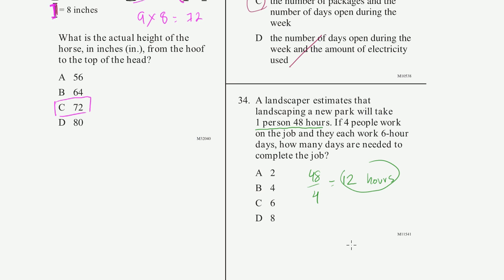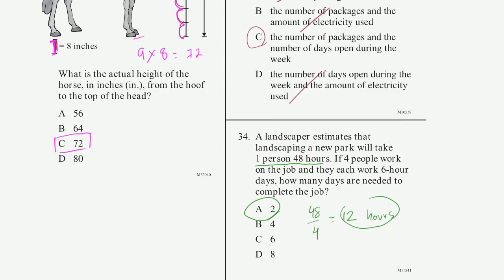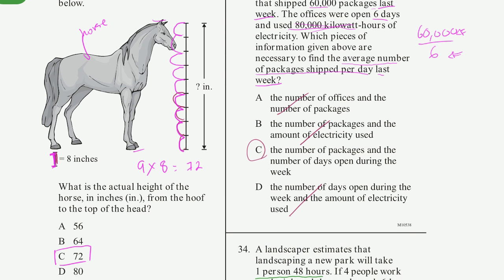all working simultaneously, and they each work 6 hour days. So they're going to work a total of 12 hours, right? Because there's four of them. So they can take one fourth the time. But they can only do 6 hours per day, so it's going to take them two days to work their 12 hours. So it's going to take two days to complete the job. And that's all we have on that page.